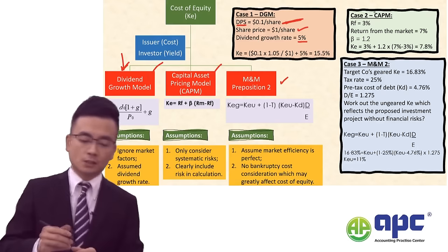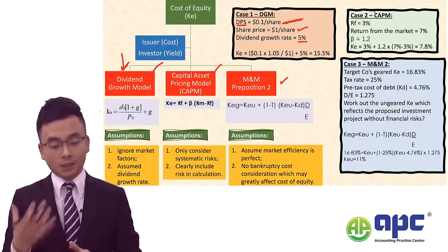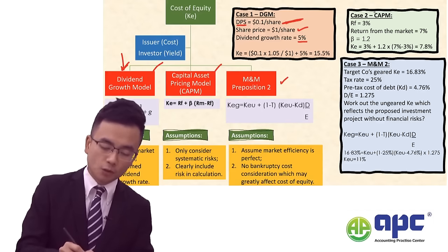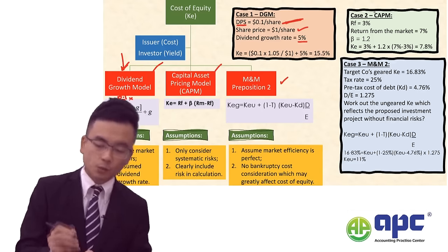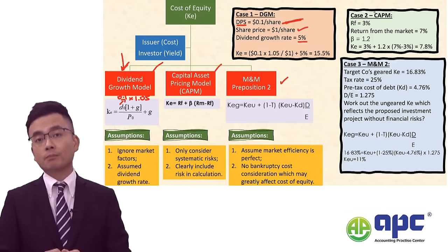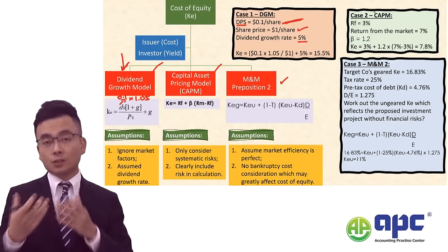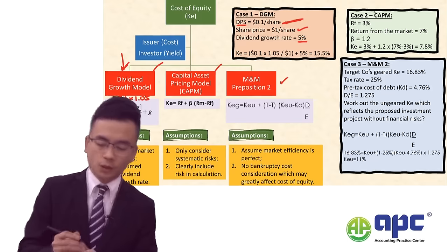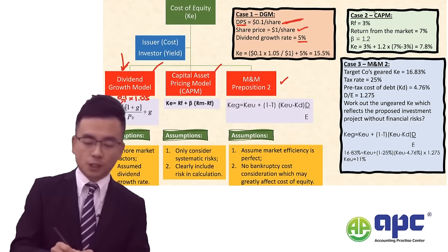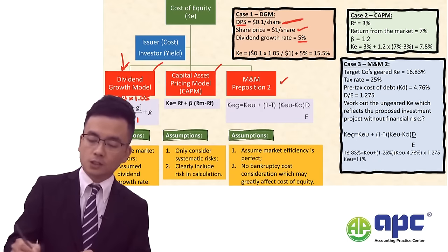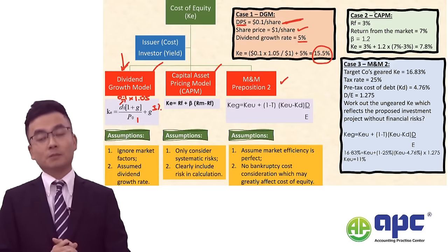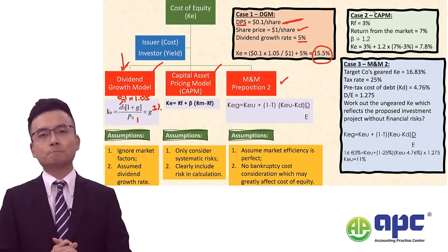If I slot the numbers into the dividend growth model formula, we take the current dividend per share of $0.10, expecting to grow at 5% — so that's $0.10 × (1 + 5%) — divided by the share price of $1.00, plus the growth rate of 5%. This means the cost of equity to the issuer will be 15.5%.